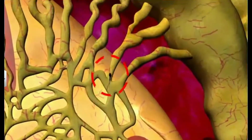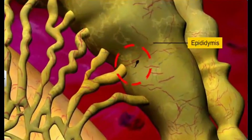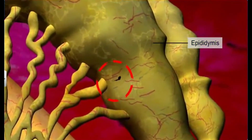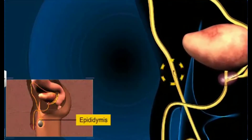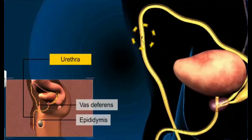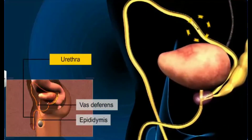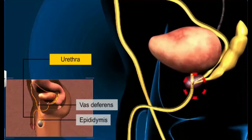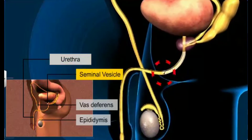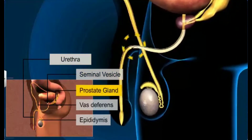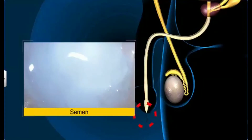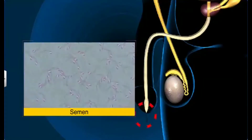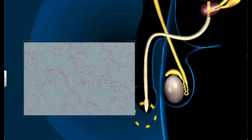The lumen has testicular fluid that helps transport the non-motile sperm to the epididymis, where they mature and become motile. During ejaculation, sperm from the epididymis are transported via the vas deferens to the urethra in the penis. The sperms pass through different tubes and mix with fluid secreted by the seminal vesicles and prostate gland to form a mixture called semen, which is ejaculated by the penis.